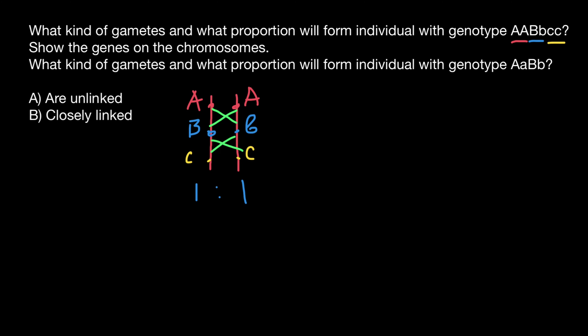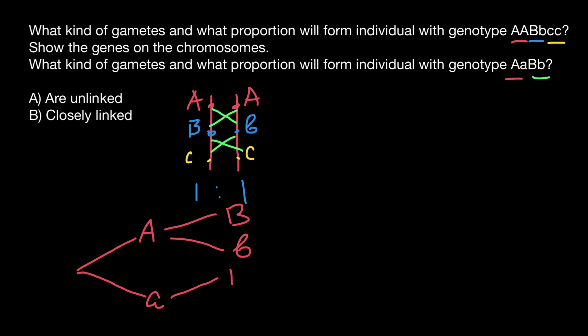Let's use the fork method. We have an organism that is heterozygous for gene A, so we have dominant allele A and recessive allele a. And for gene B, again we have two variants: dominant allele B or recessive allele b — and dominant allele B or recessive allele b. This gives us one, two, three, four variants of gametes. So one genotype can produce four variants of gametes.